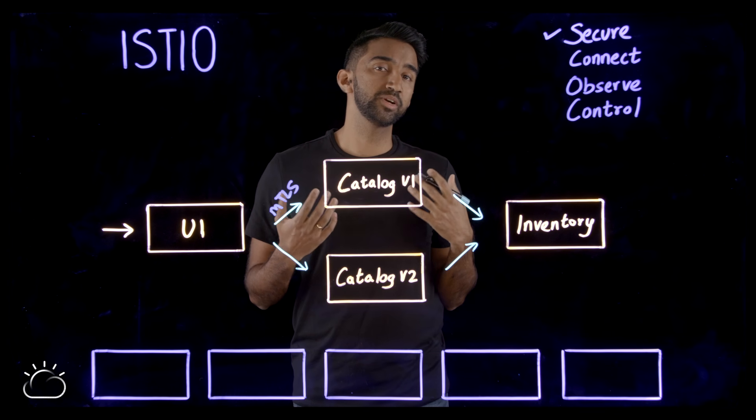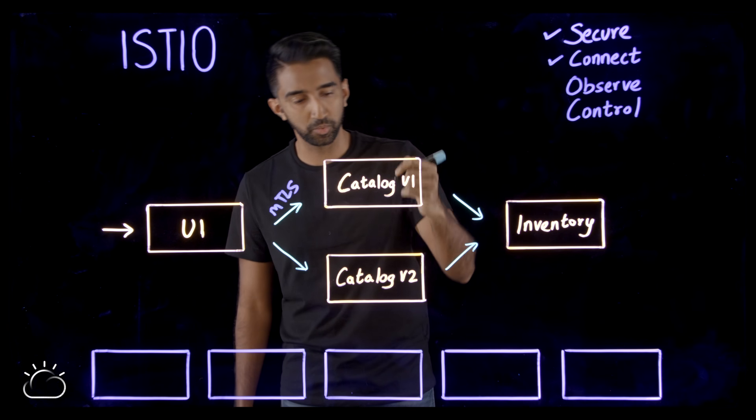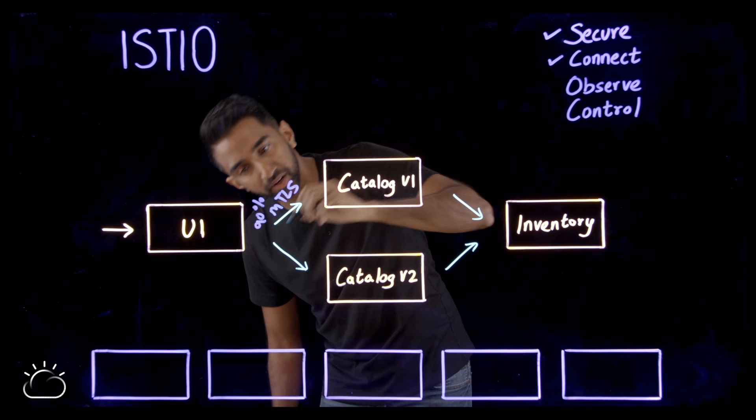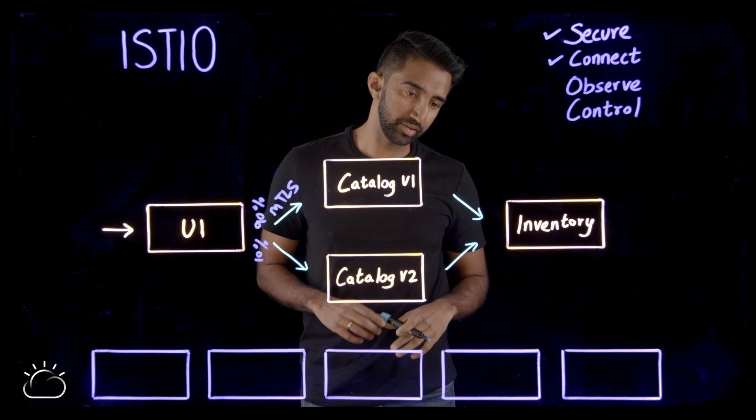Next, they want to dynamically configure how the services are connected to one another. So in this example, there's version 1 and version 2, so I might want to send 90% of the traffic to version 1 and then 10% of the traffic to version 2 while I do testing and incremental rollouts.